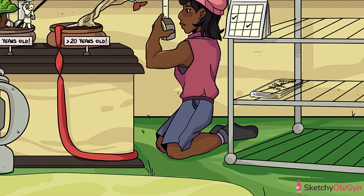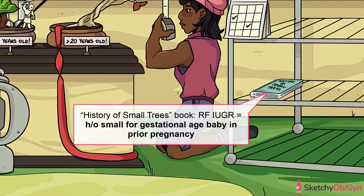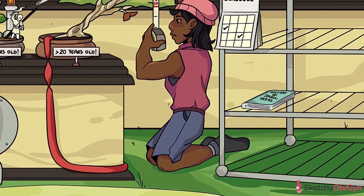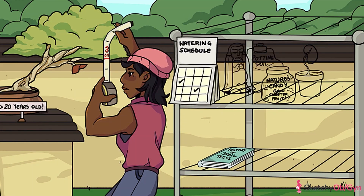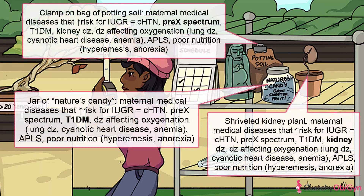As with many things in obstetrics, a history of having something occur in a previous pregnancy is a risk factor for having it occur in a subsequent pregnancy. This is the same for growth-restricted fetuses, with around 20 percent of those who had one in a previous pregnancy having another one in the current pregnancy.